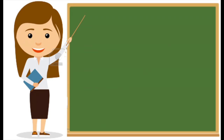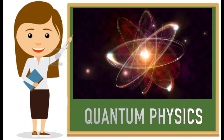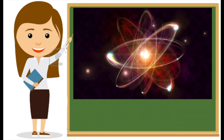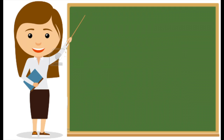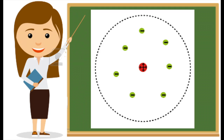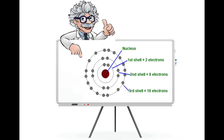He continued his studies in quantum physics, including his work with Rutherford and other scientists, developing a model which is known today as the Rutherford model. However, Bohr discovered the flaws in Rutherford's atomic model and started improving it, soon inventing the Bohr model.